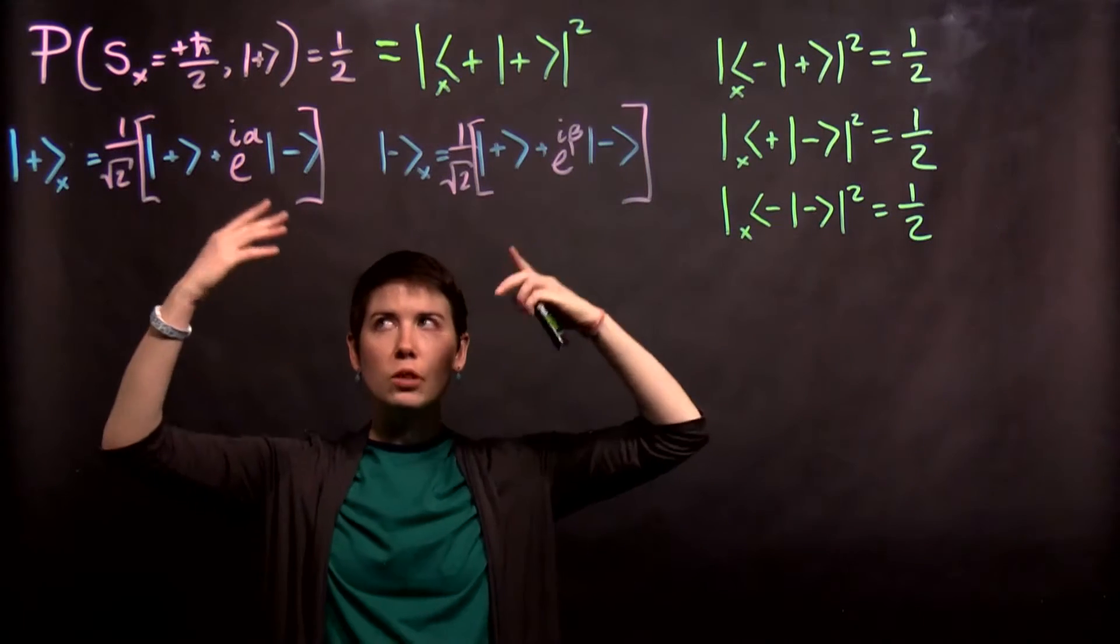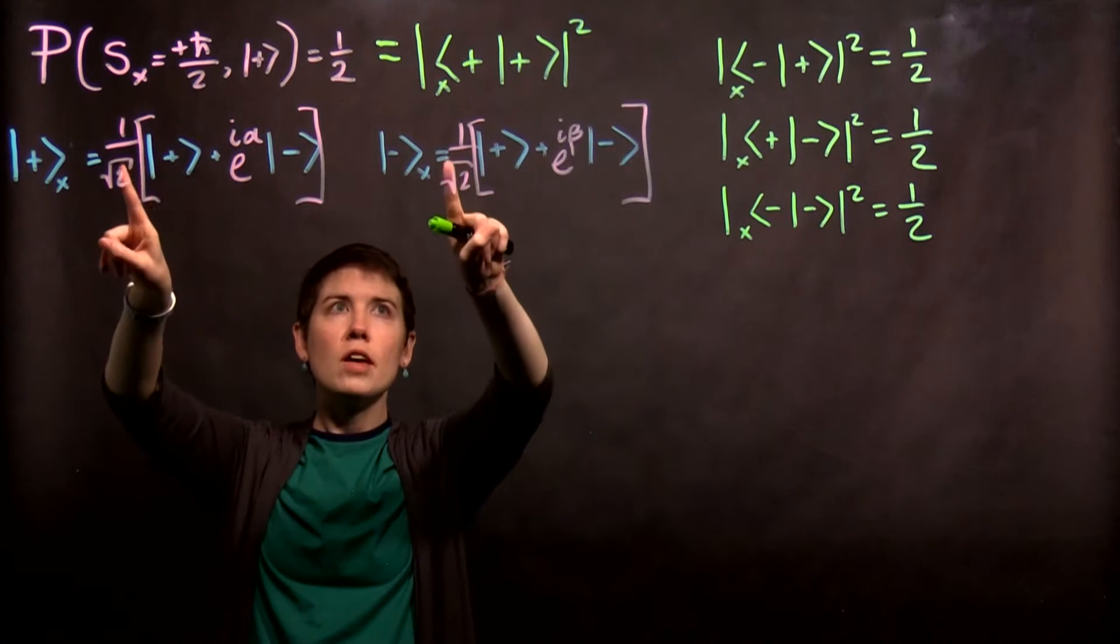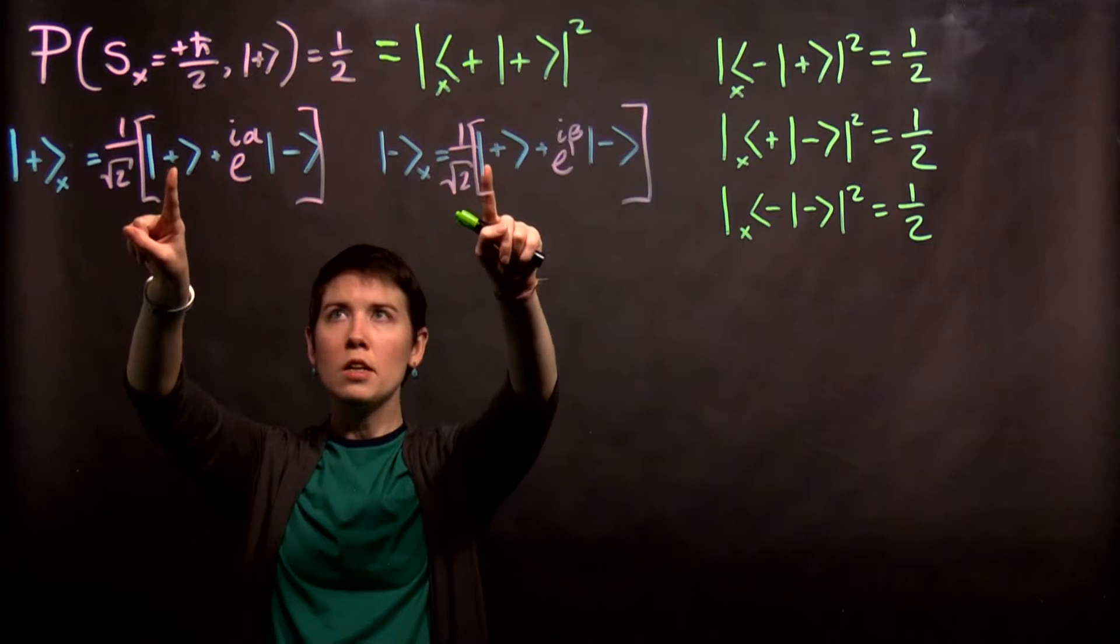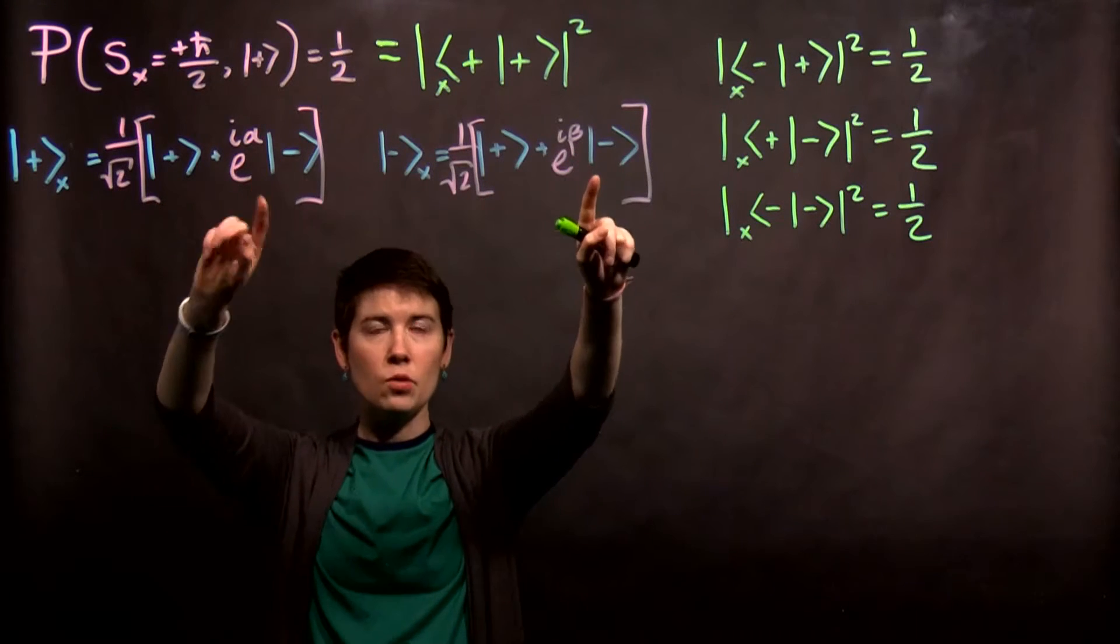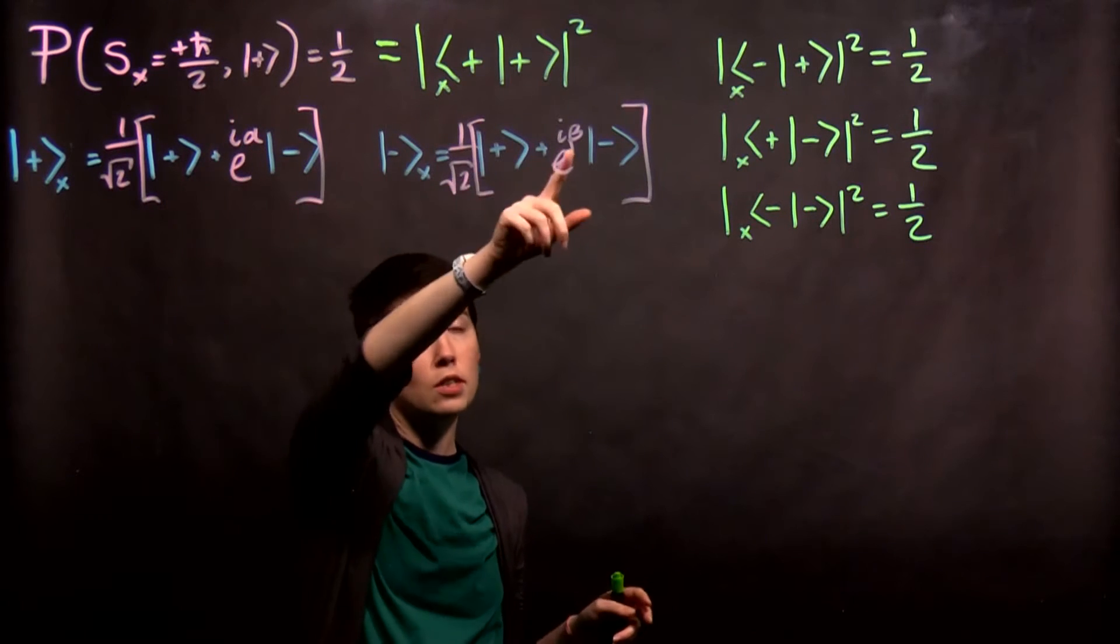This 1 over square root of 2 would have been in both coefficients, so we've pulled it out. Effectively we're seeing that there's this overall coefficient which is also coming from normalization, and then the individual coefficient here once we've pulled that out is 1, and now we have this complex phase. Notice that for the spin up direction I've said that it's alpha, and for down it's beta.